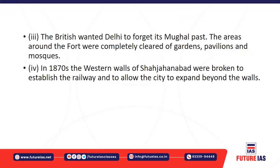The ultimate aim of the British was to completely eliminate the Mughal past and make the people of Delhi forget the Mughal legacy. The areas around the fort were cleared of gardens, pavilions, and mosques. In 1870, the walls of Shahjahanabad were broken to establish the railway, allowing the city to expand beyond the walls. The British started clearing gardens, breaking down walls, and constructing railways to make the people forget the Mughal legacy.